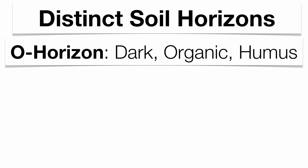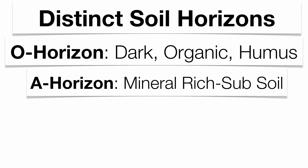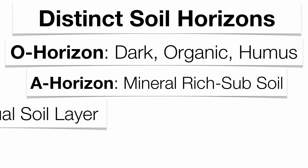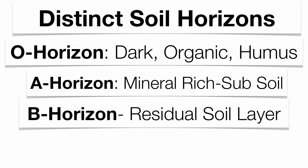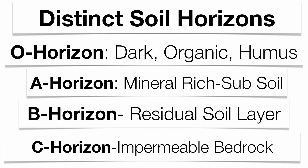The most important layer is the O horizon — a very dark, organic layer often called topsoil or humus. You can buy bags of it at Home Depot. It's very dark, indicating high organic content. Underneath that is the A horizon, a mineral-rich subsoil. Below that is the B horizon, called the residual soil layer, which matches the composition of the layer below it — the C horizon, your impermeable bedrock. The O horizon is by far the most important because of its organic content, dark color, and composition of weathered rock remains.